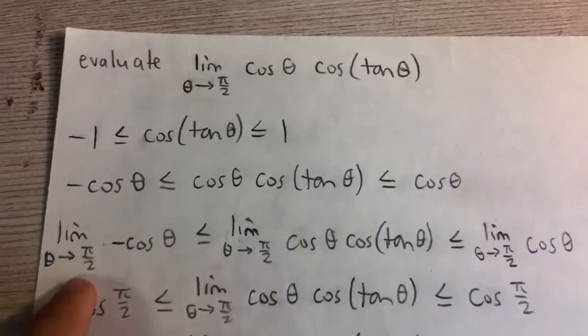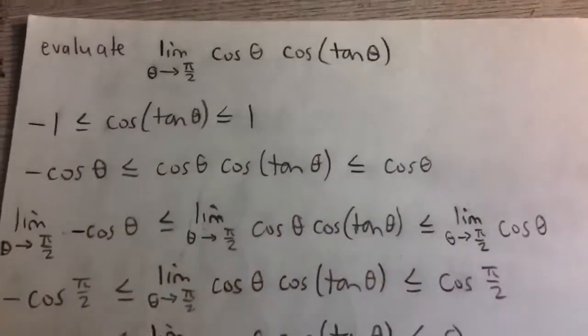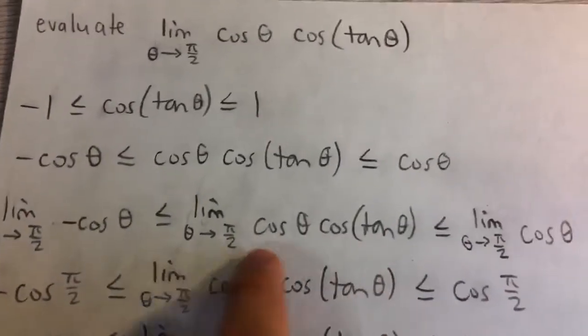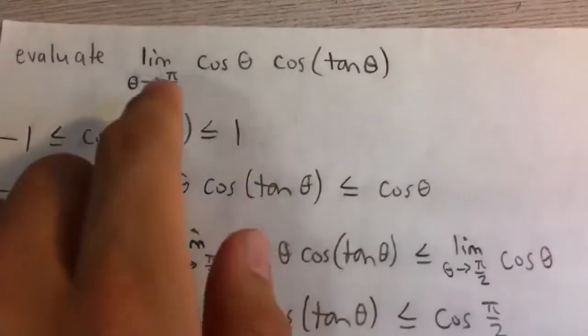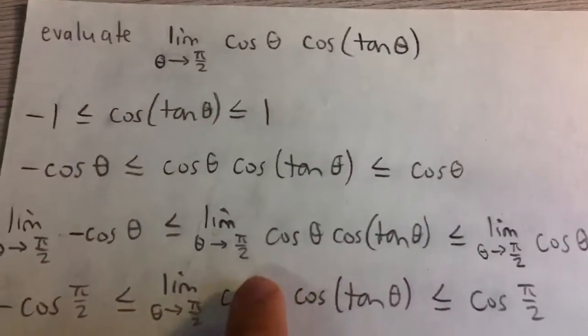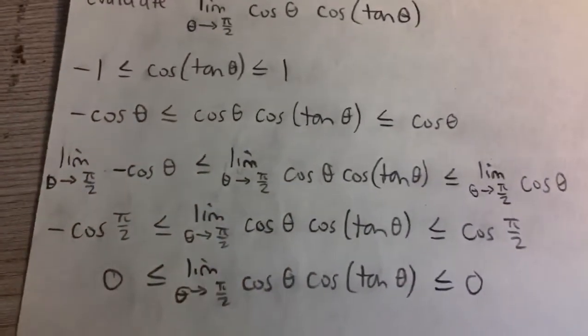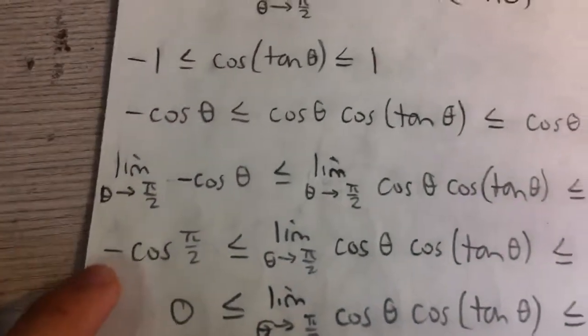Then we take the limit as theta approaches pi over 2 of all three parts and again because we're trying to get the original limit in the middle of the inequality and then we can evaluate the inequality on each end.